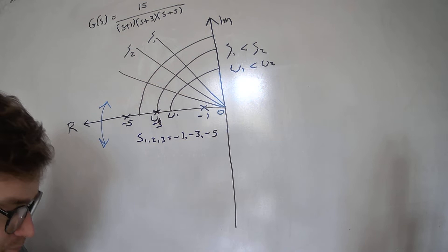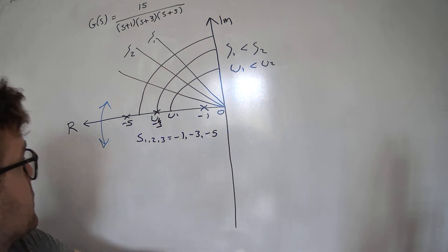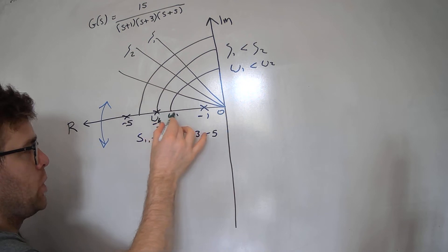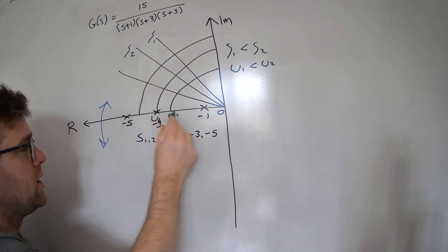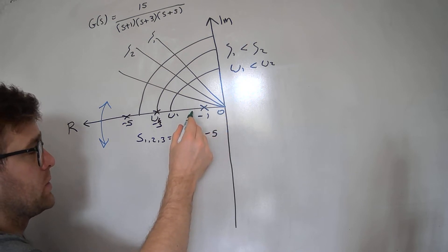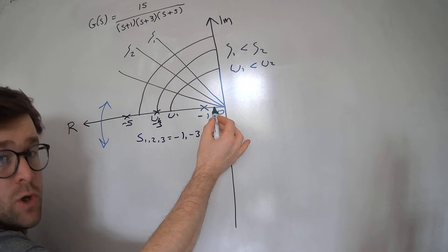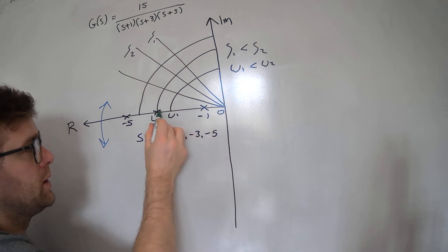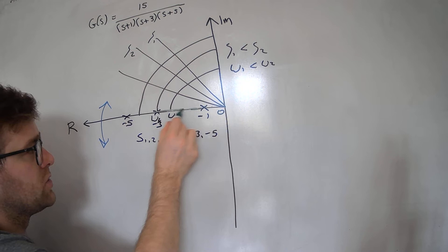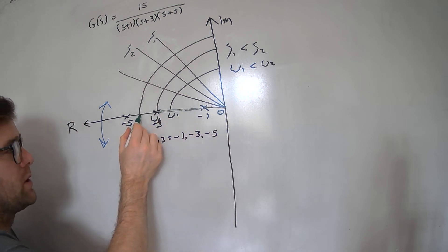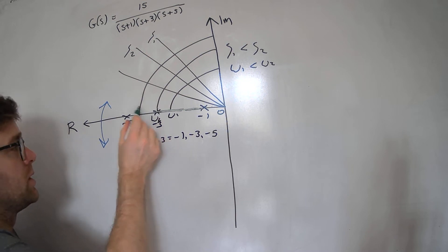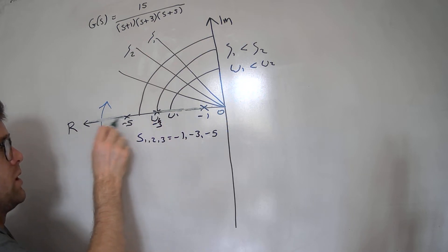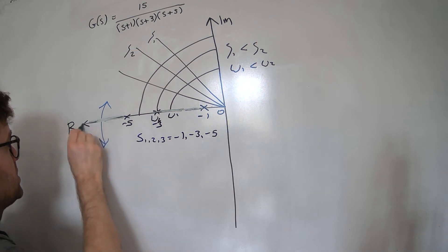The s-plane is symmetric about the real axis. To determine the root locus along the real axis, at any point the number of poles and zeros to the right must be odd. Here, with no poles to the right I'm not on the root locus; with one pole to the right I am; with two poles to the right I'm not; between the leftmost poles with three to the right, I am on the root locus.